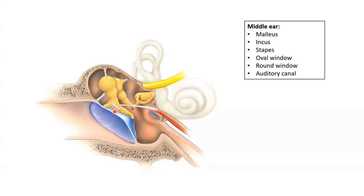Extending across the middle ear and attached to both the middle ear and one another are the three smallest bones in the body. These bones are collectively called the auditory ossicles, and individually they are named for their shapes: the malleus, the incus, and the stapes. The head of the malleus articulates with the internal surface of the tympanic membrane. The other end articulates with the body of the incus, which in turn articulates with the head of the stapes, and the end of the stapes fits into the oval window.